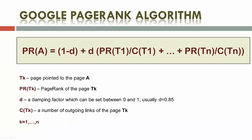Page rank is a measure of a page's importance within the set of linked pages. An algorithm used for determining the page rank assigns a numerical weighting to each element of a hyperlink set of documents in the World Wide Web.